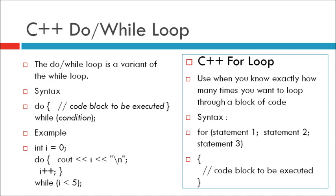Syntax: do { code block to be executed } while (condition). The example below uses a do-while loop. The loop will always be executed at least once, even if the condition is false, because the code block is executed before the condition is tested.